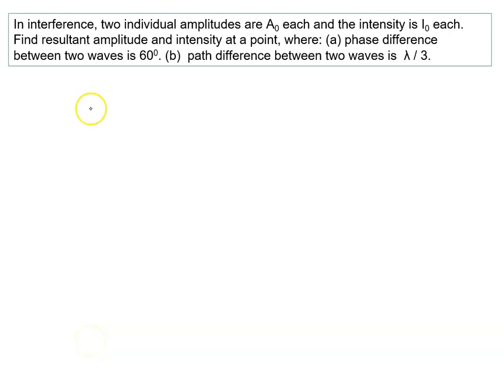In interference, two individual amplitudes are A0. A1 equals A0 and A2 equals A0, and the intensity is I0. I1 equals I0 and I2 equals I0. Find resultant amplitude and intensity at a point where: (a) phase difference between two waves is 60°, (b) path difference between two waves is λ/3.